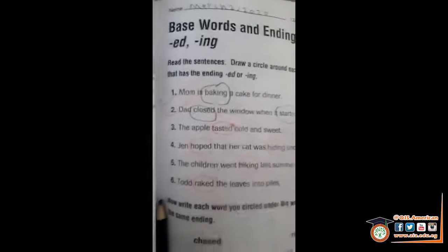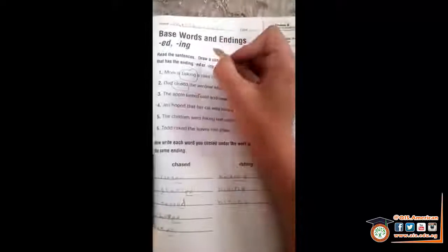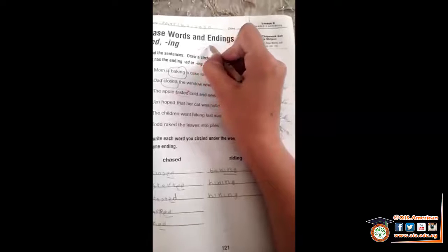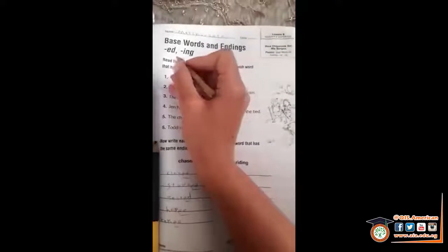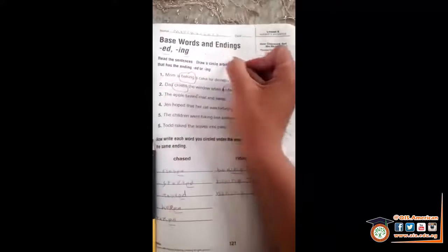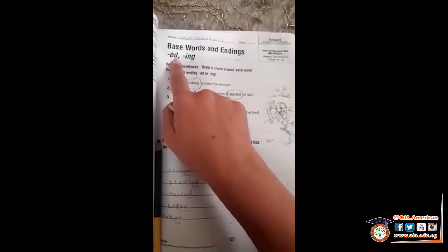The first concept we're going to revise in Lesson 9 are the base words and endings: ED and ING. What does that mean? That means we have our verbs and we have to know when to put ED or ING on the end of the verb. We know that ED means that the action was done a long time ago — it happened in the past.